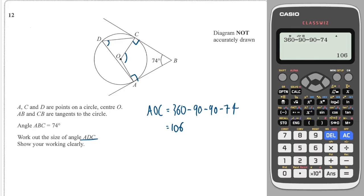Since angle AOC is 106°, angle ADC is half of that — because angles at the center are twice angles at the circumference — so ADC = 53°. This question says to show your working clearly rather than requiring stated reasons.